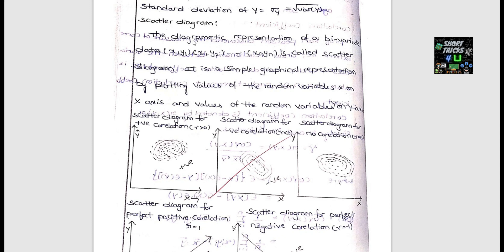The scatter diagram is a diagrammatic representation of bivariate data. Points plotted show the type of correlation: perfect positive correlation goes from bottom-left to top-right, while perfect negative correlation goes the other direction. Positive correlation means a linear upward trend; negative correlation means a downward trend.